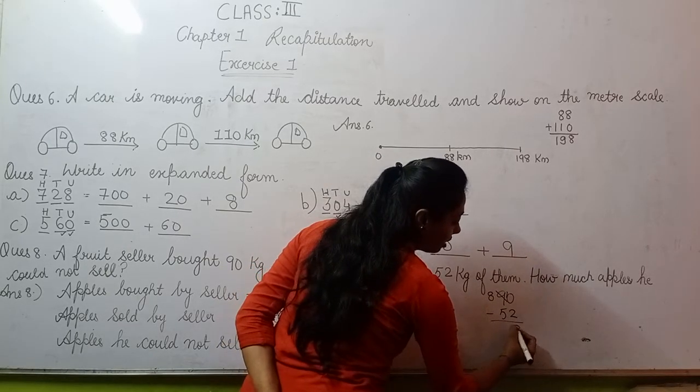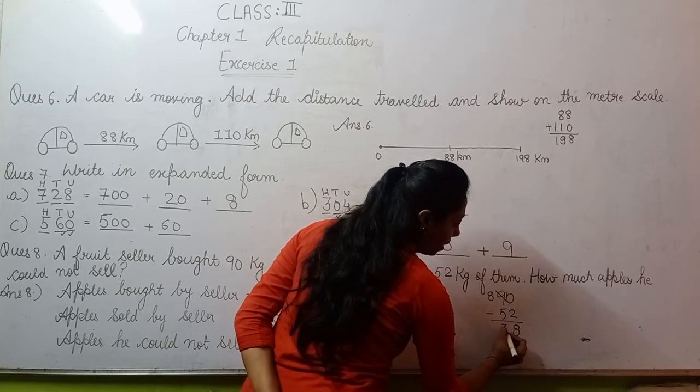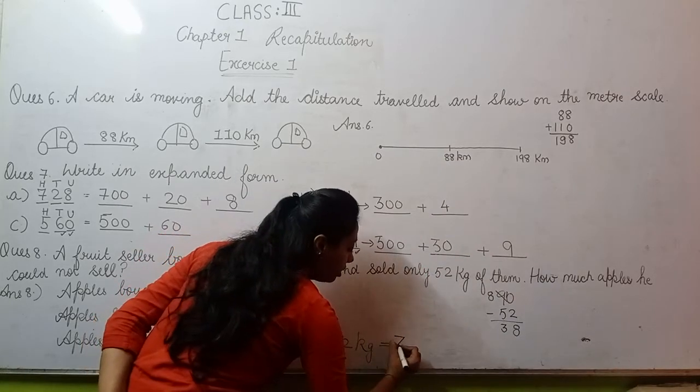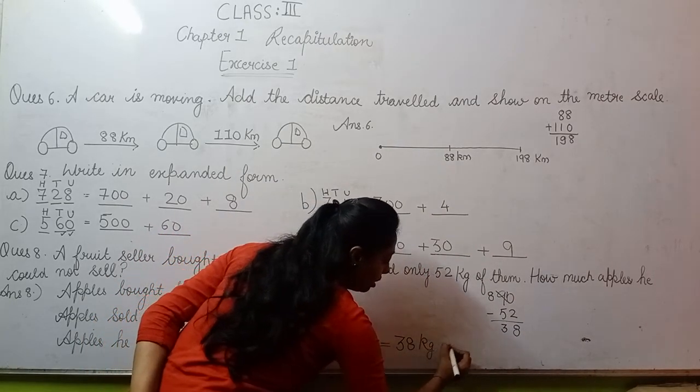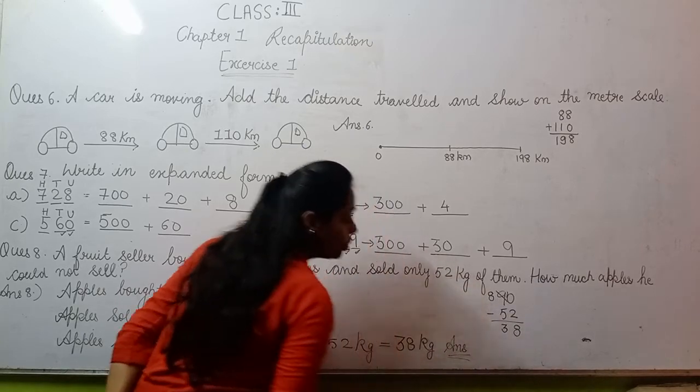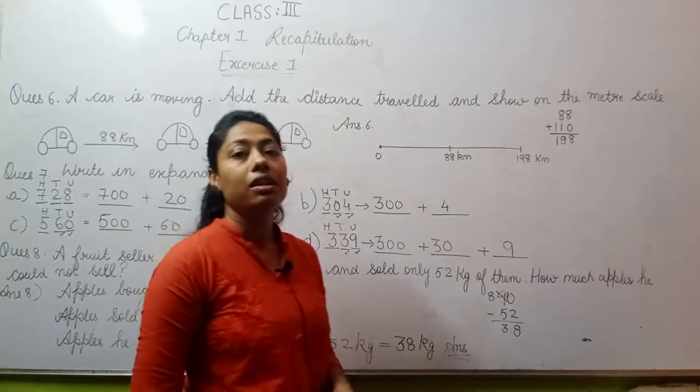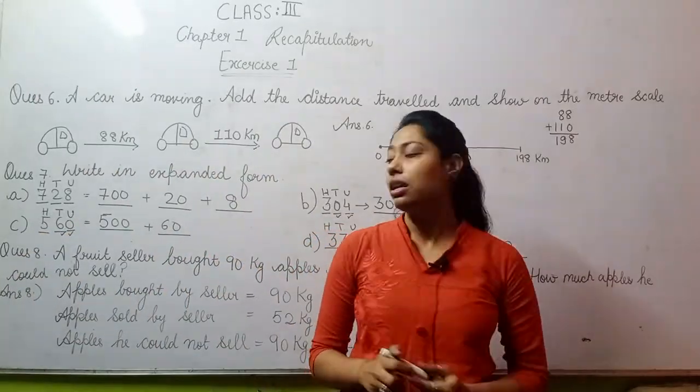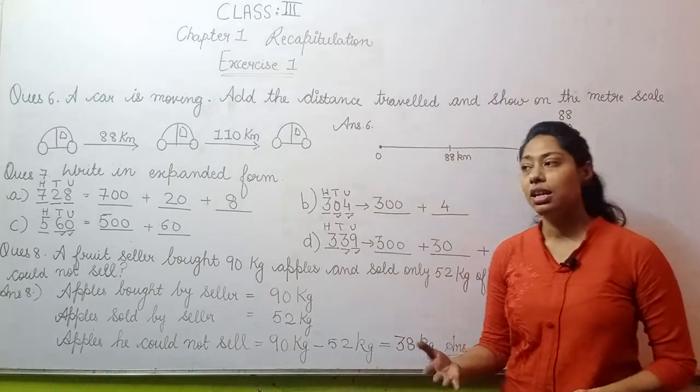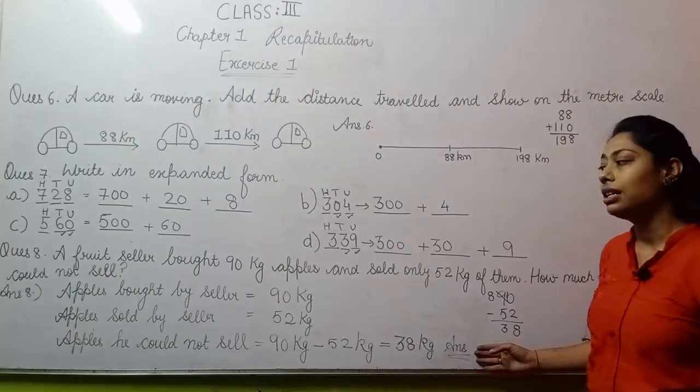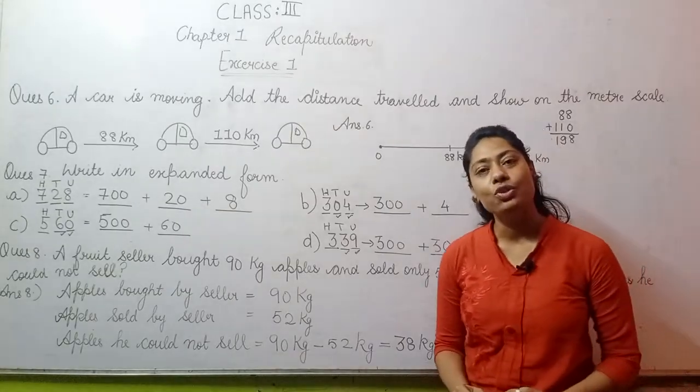We'll write 8 here and carry forward 1. This becomes 10. Subtract 2 from 10, that's 8. Subtract 5 from 8, that's 3. So 38 kgs is your answer. What is this? These are the apples that our seller could not sell. They went to market to sell but could sell only 52 kgs, and how many could they not sell - our shopkeeper could not sell 38 kgs, and that's what the question asked you.